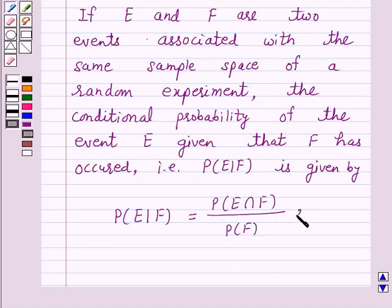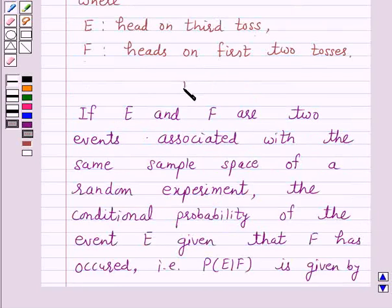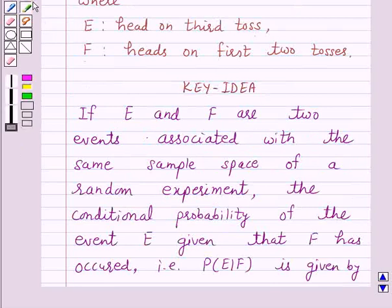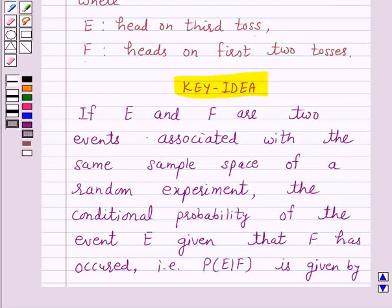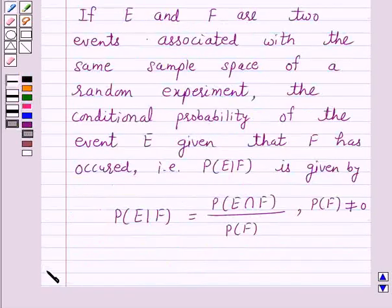Provided probability of F is not equal to zero. So this is the key idea behind our question. We will take the help of this key idea to solve the above question. So let's start the solution.